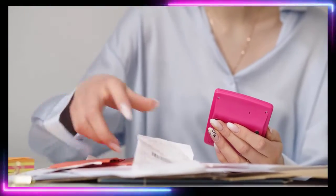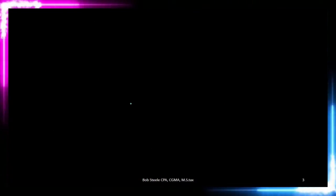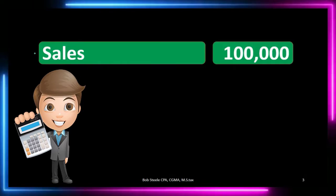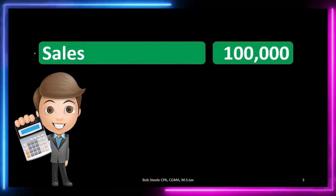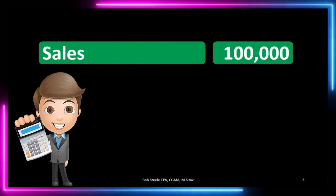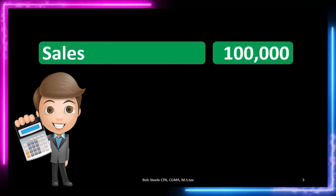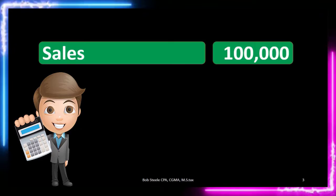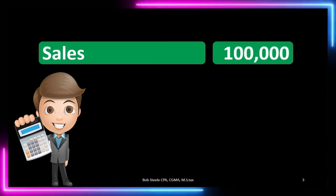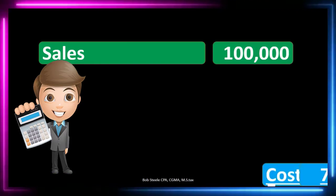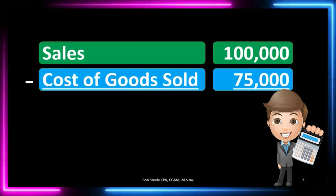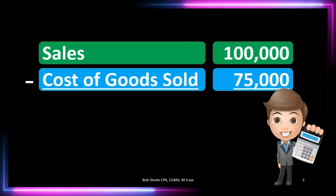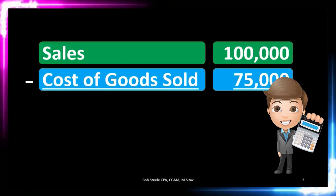Generally, if we have a multi-step income statement, to calculate gross margin — also called gross profit — we look at the calculation. Sales here represents net sales, meaning the bottom-line number on the sales section of the multi-step income statement: sales minus sales returns, allowances, and discounts — one hundred thousand in this case. We then subtract out the cost of goods sold, the most important expense related to the inventory we are selling.